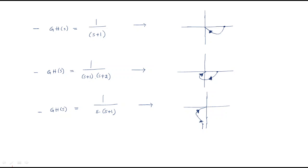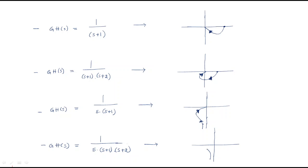If we again add another finite pole, the transfer function becomes 1/(s(s+1)(s+2)). Then the ending direction will change. It starts from here and ends with a direction of this type. You can observe that for the previous pole configuration, ending was in this region only.